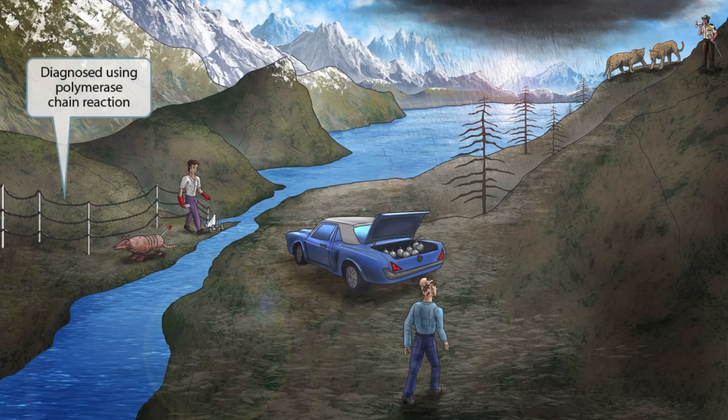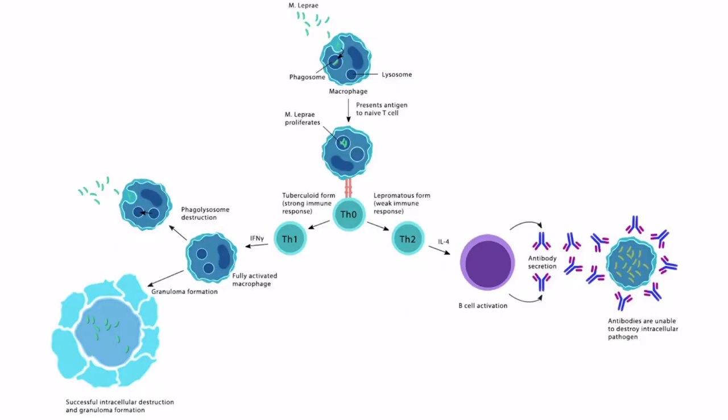Now let's move on to discuss the two forms of leprosy: the lepromatous form and the tuberculoid form. The mechanism and immune response are pretty high yield and somewhat complicated, so perhaps it would be best to walk through this logically first using this diagram. The response to Mycobacterium leprae is somewhat similar to Mycobacterium tuberculosis, so you can see that this diagram is similar to the one used in the last video.